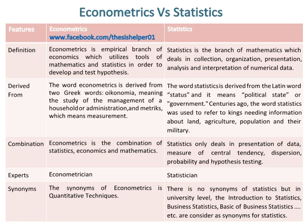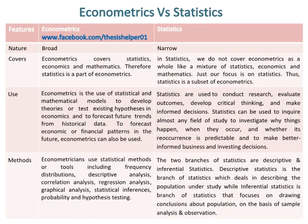There are no strict synonyms for statistics, but at the university level, introductory statistics, business statistics, and basic business statistics are considered related terms. The nature of econometrics is broad while the nature of statistics is narrow. Econometrics covers statistics, economics, and mathematics, so statistics is a part of econometrics, while statistics does not cover econometrics as a whole.